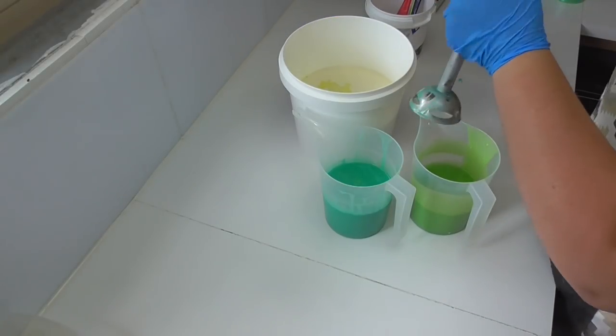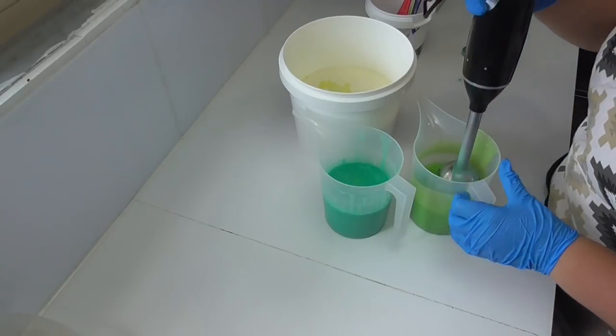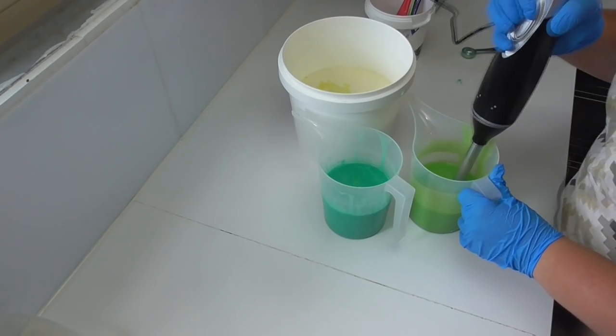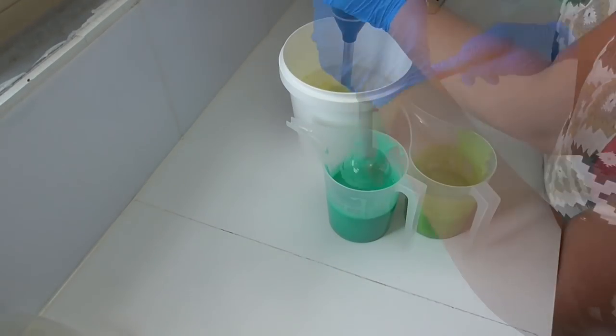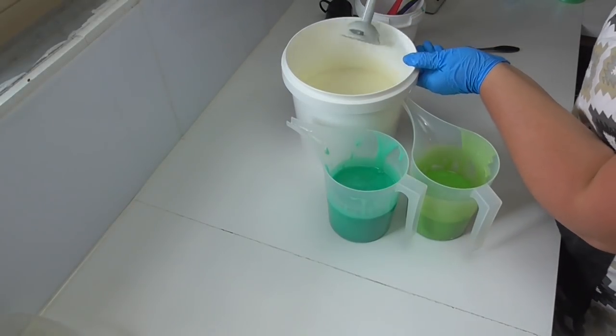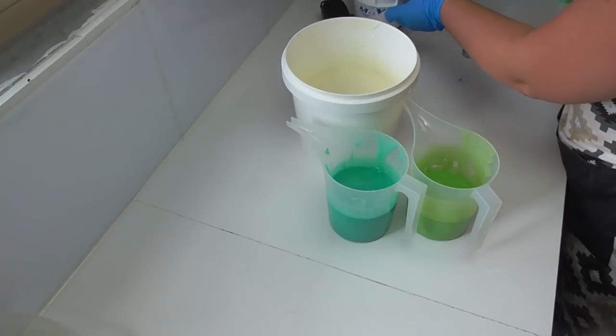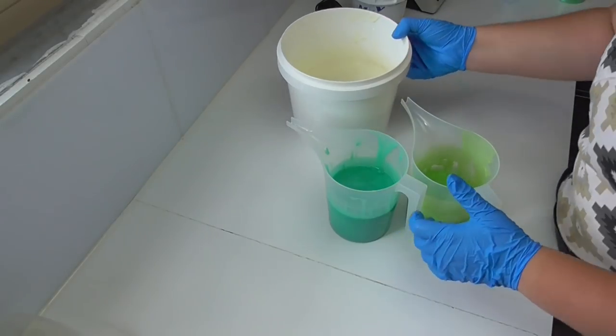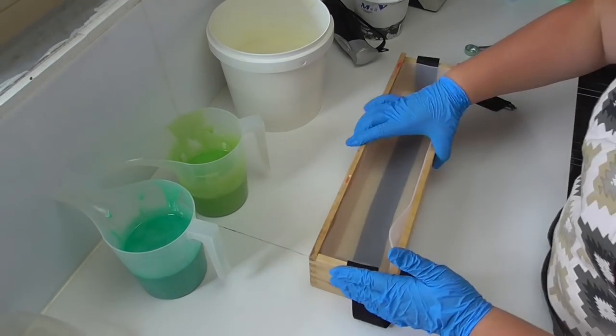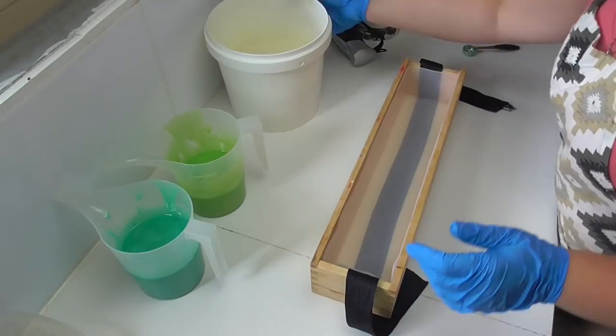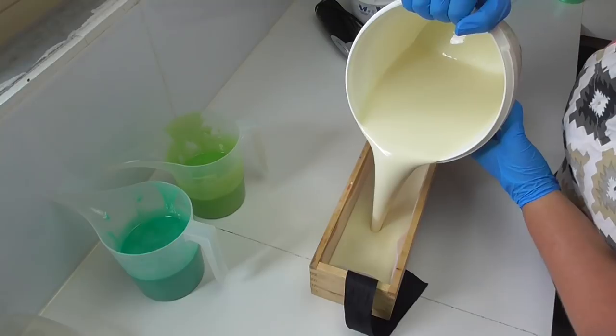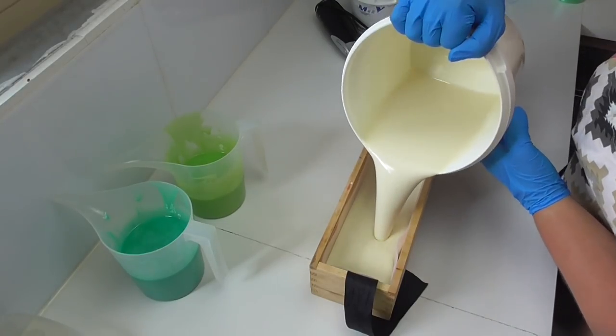So I was hoping not to have to stick blend this but it does look like it's going to rice just slightly. So we're going to give it a quick blitz which will hopefully sort that out. Okay, so that quick blitz has actually got rid of that ricing that was happening. But because I have mixed that in with the stick blender I'm now going to start moving quite quickly so I don't end up with soap just sat in the bucket. First thing I'm going to do is pour a whole heap of this white into the mould and then we'll drop in the two different greens.